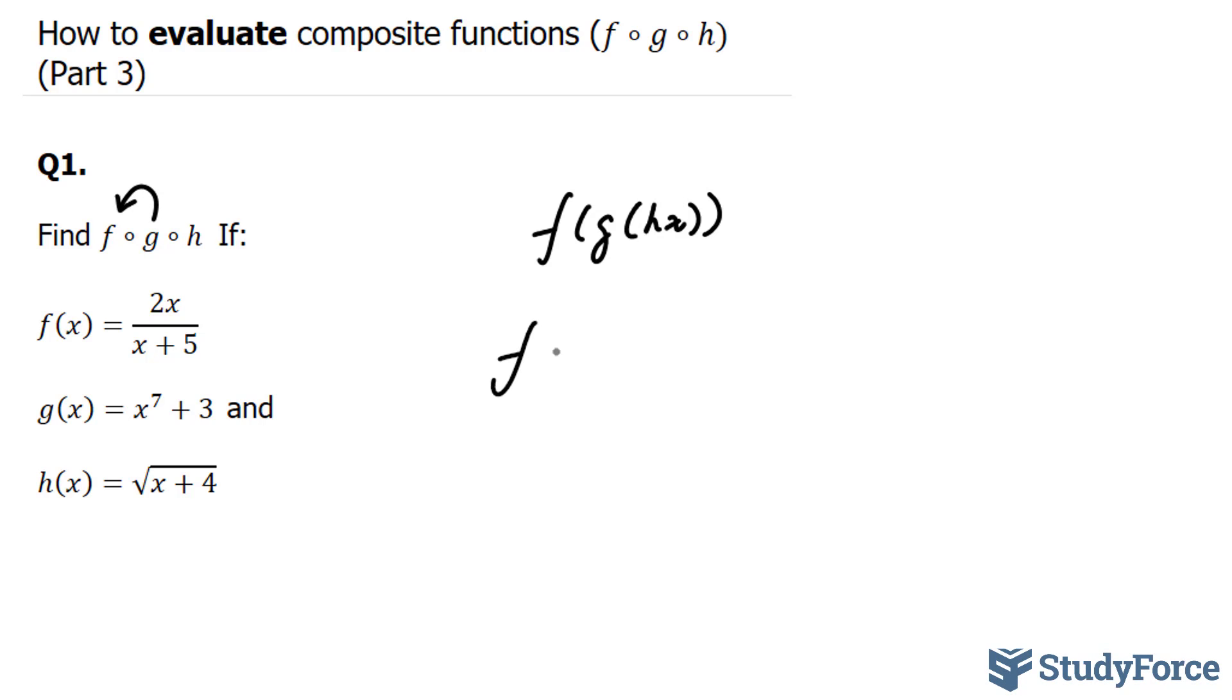So let's do that. f at g of x is equal to 2 times x to the power of 7 plus 3 over x to the power of 7 plus 3 plus 5.